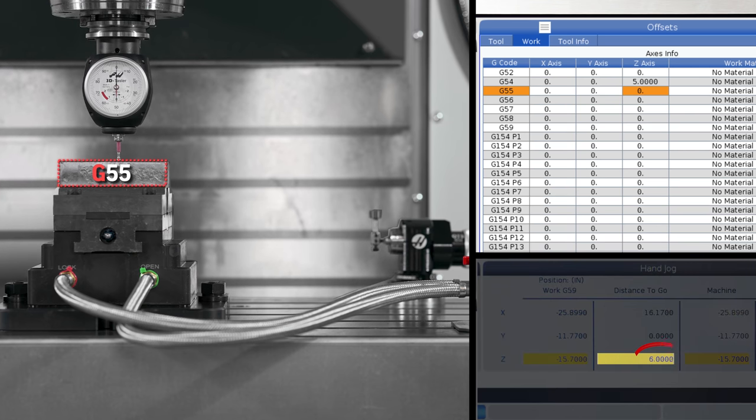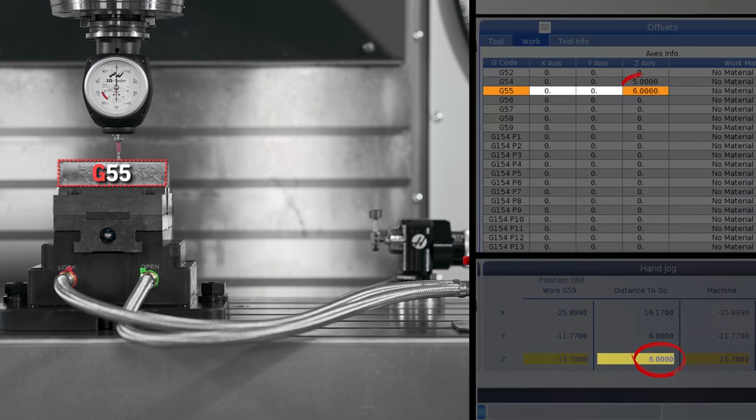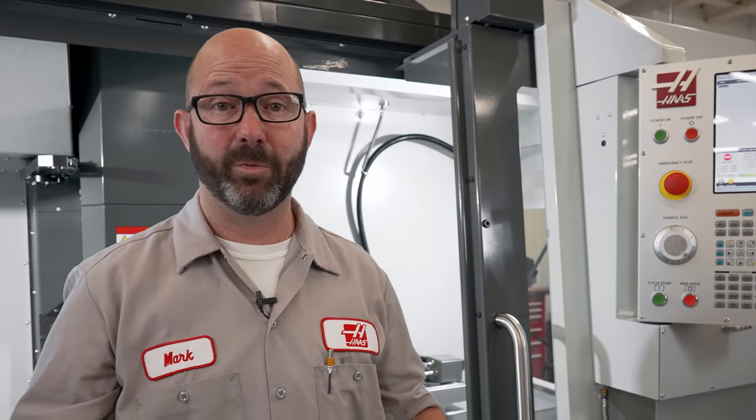We'll repeat the process for our G55, measuring the distance from our touch-off point to the top of our G55 workpiece and entering that distance as our G55 Z value. That is it; we have set our tool lengths and our work offset Z values.